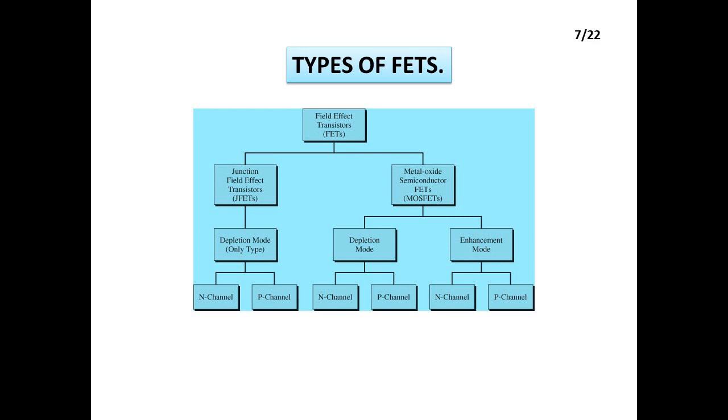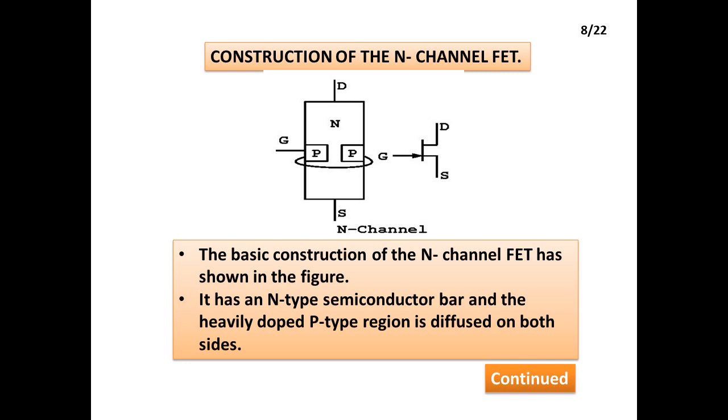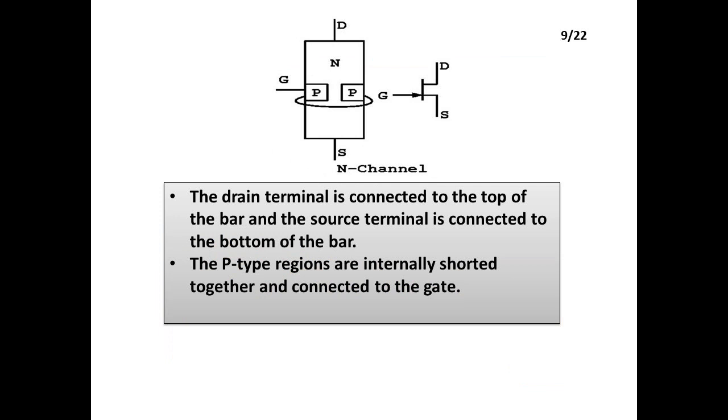Construction of the N-Channel FET: The basic construction of the N-Channel FET as shown in the figure. It has an N-type semiconductor bar and the heavily doped P-type region is diffused on both sides. The drain terminal is connected to the top of the bar and the source terminal is connected to the bottom of the bar. The P-type regions are internally sorted together and connected to the gate.